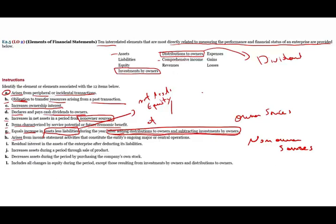H: something arises from income statement activities that constitute the entity's ongoing major or central operation. So something happened from the income statement activities that's part of your central or ongoing operation. Central and ongoing operations are your revenues minus your expenses. So here we are dealing with revenues and expenses.